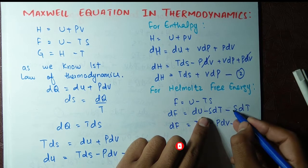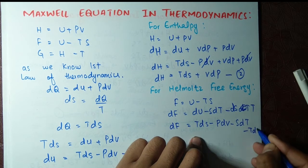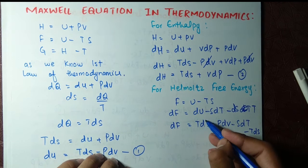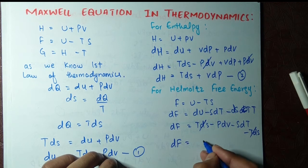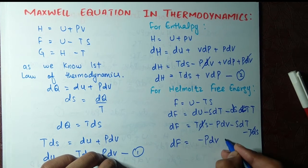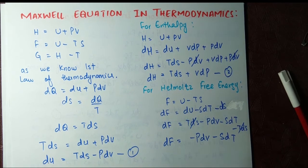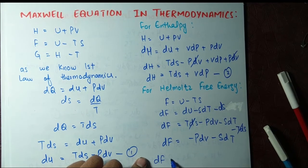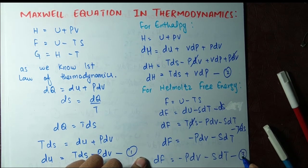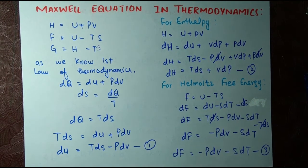The plus T dS and minus T dS cancel out, so dF equals minus P dV minus S dT. This is equation number three. We have now derived three of the four fundamental differential equations.